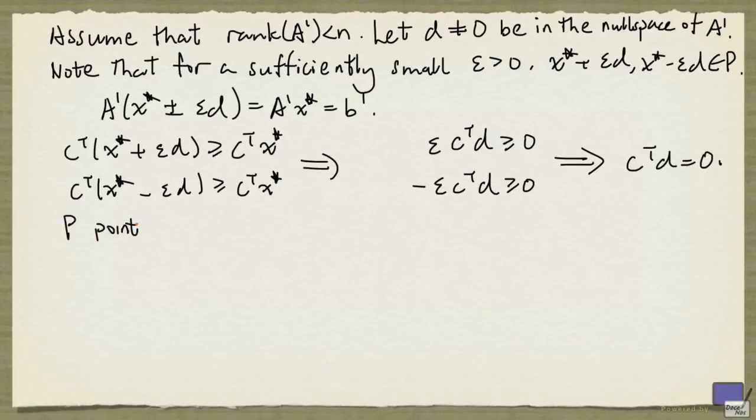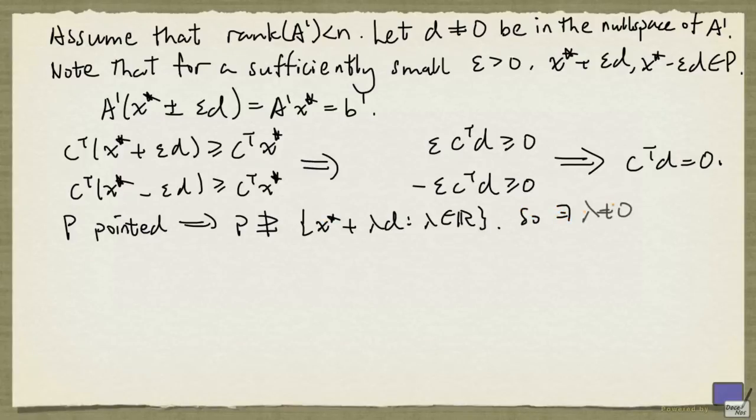It's not difficult to show that if P is pointed, then P does not contain any line. But x* is in P, so there exists a non-zero λ such that x* + λd is not in P, and we may assume that λ is positive, because if that's not the case, we can replace d by its negation.